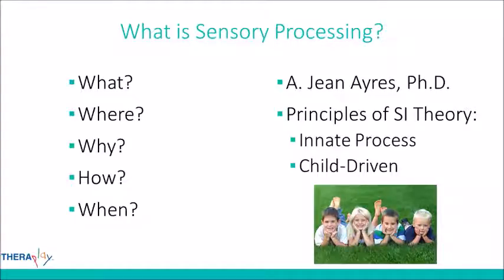The 'where' — it occurs in our central nervous system, and if everything's going as it should be, it's a well-balanced and reciprocal process. Why is sensory integration important? It really helps us survive, make sense of the world, interact with our environment in meaningful ways, and interact with others.